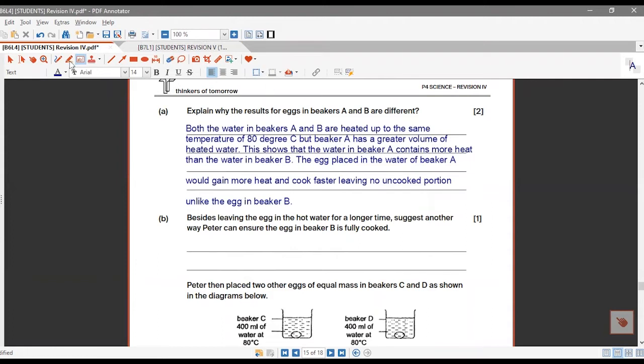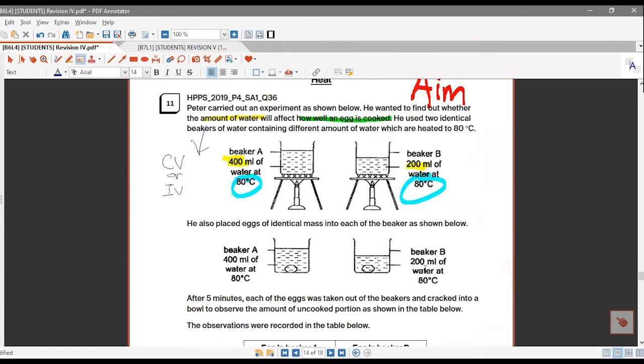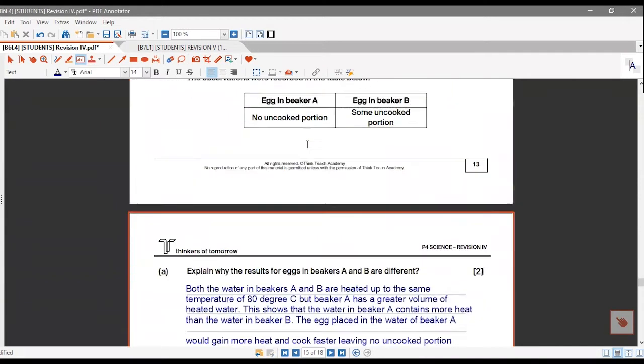Increase the temperature. No, both temperatures are already at 80 degrees Celsius. So if I increase the temperature to 90, then that will make the... it will already cook already. But what is one thing that I can straight away do to Beaker B?